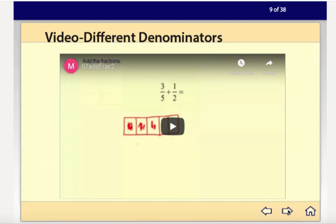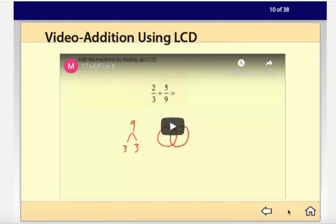So here's a video adding with different denominators. And here's another video adding by finding the lowest common denominator. And this is also the end of my loop. There's no next arrow. So when I'm done with this video, I can press the home button to go back to the main menu.